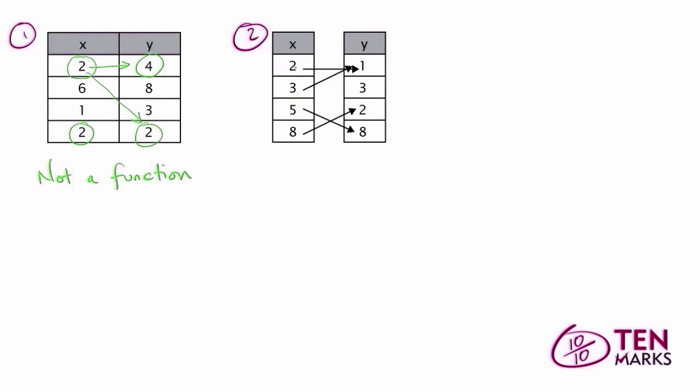A couple things to notice. I see that there is no single x value that repeats with a different y value. For example, each x value here in the left-hand column corresponds to a unique output value. Which means that this mapping diagram represents a relation that is a function.